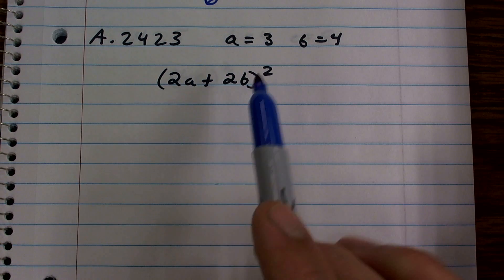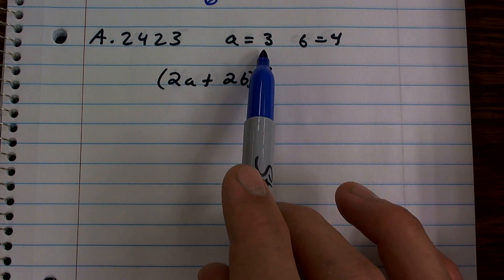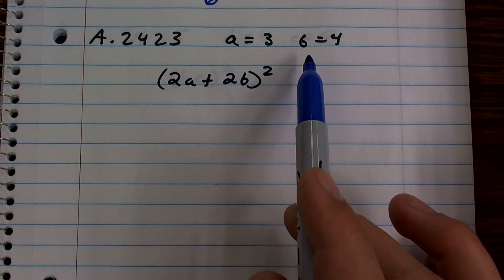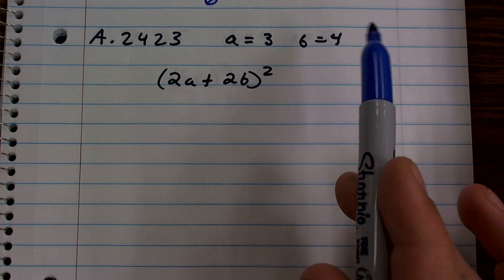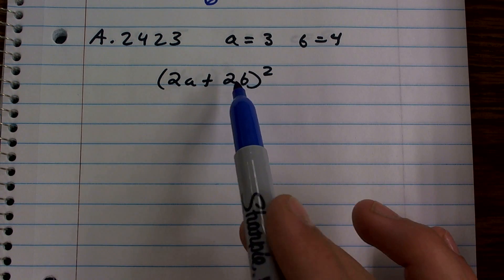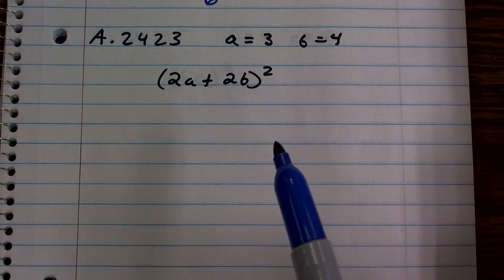However, for the problem, they're now telling me that the value of A is 3 and the value of B is 4. So what I can do now is substitute in those values for the variables because they're telling us what the values are.